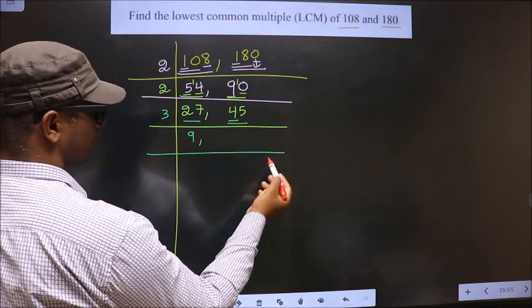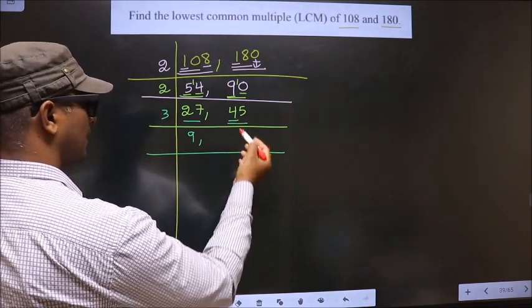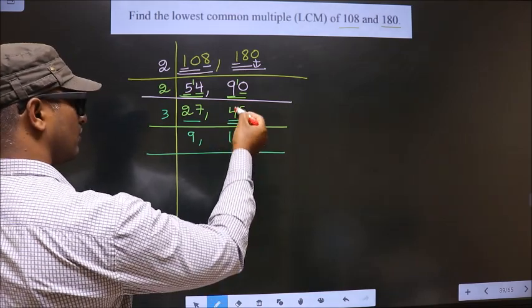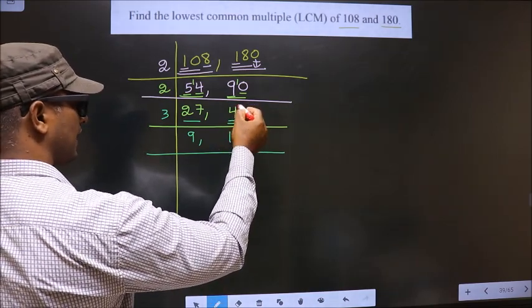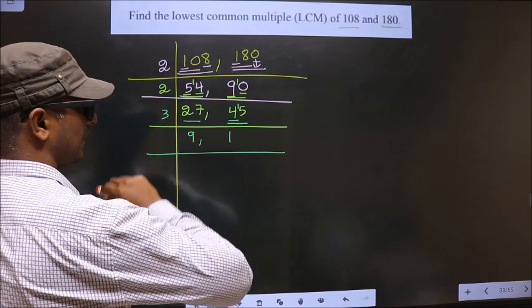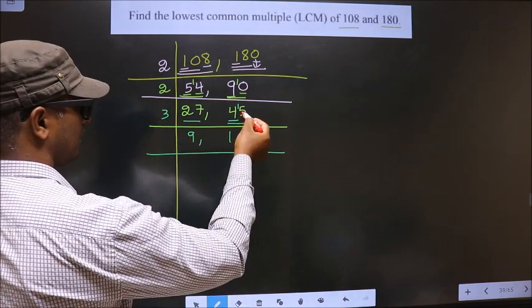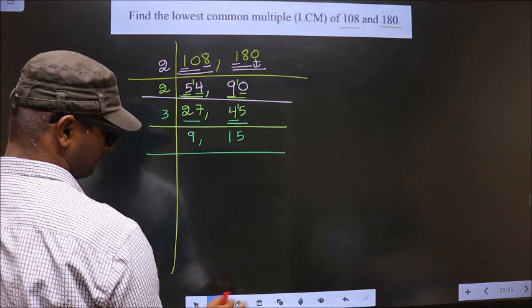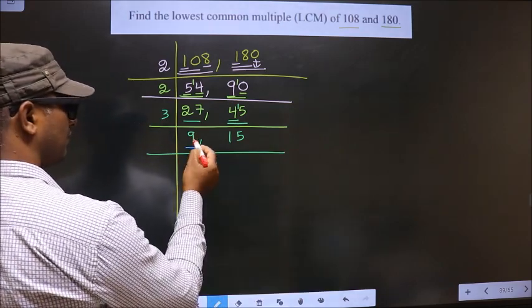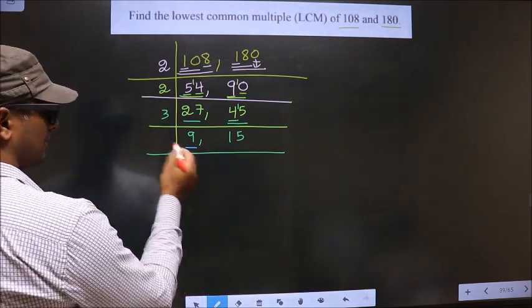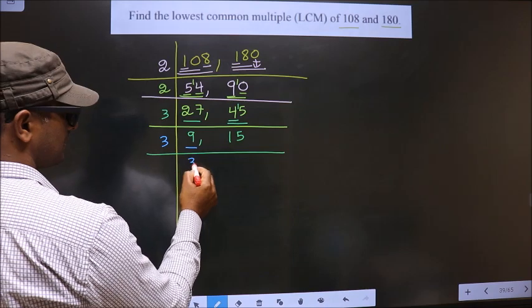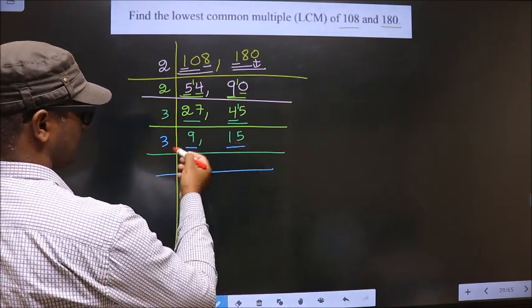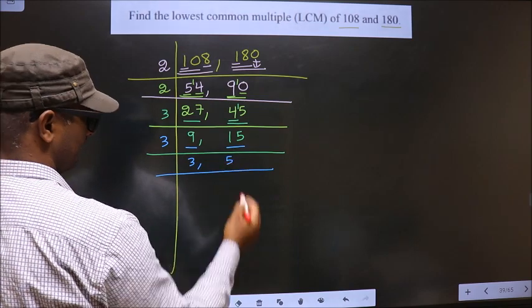So the first digit is 4. A number close to 4 in the 3 times table is 3 times 1, which is 3. 4 minus 3 is 1; 1 is carried forward making it 15. When do we get 15 in the 3 times table? 3 times 5 is 15. Now here we have 9, which is 3 times 3. The other number is 15; when do we get 15 in the 3 times table? 3 times 5 is 15.